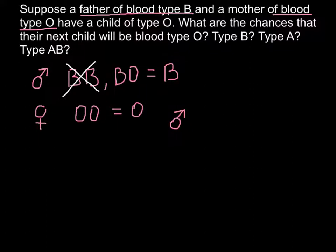But we know that their child belongs to blood group O, so only this genotype is possible for the father. So here would be father's genotype BO, and on this side would be genotype OO.